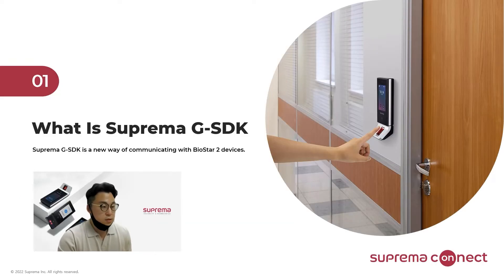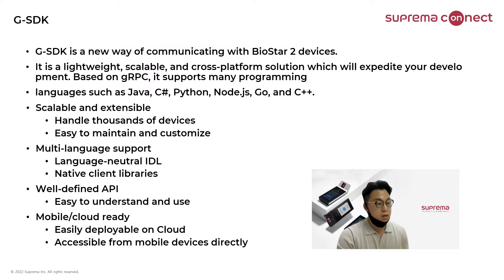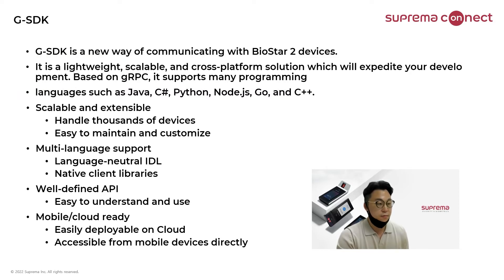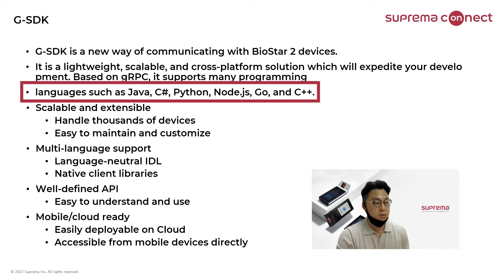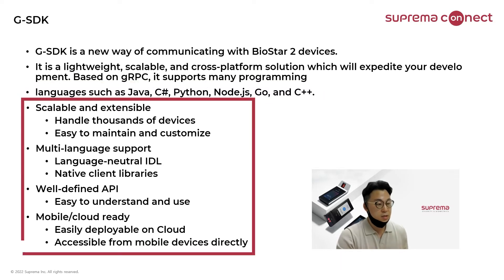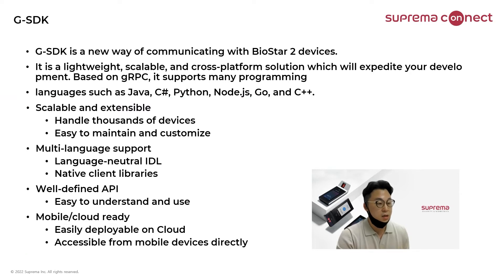Let's get started with the first content on GSDK. Suprema GSDK is a new way to communicate like Biostar 2 software and can accelerate development as a lightweight, cross-platform solution. It supports many programming languages such as Java, C Sharp (.NET Core), Python, Node.js, Go, and C++. The subject of this education is for people who are new to GSDK, and the main goal is to understand and configure it.